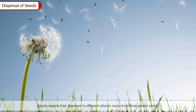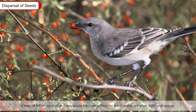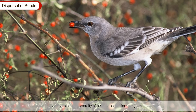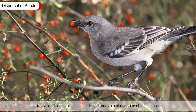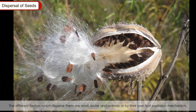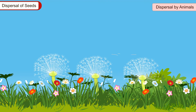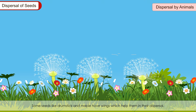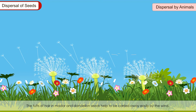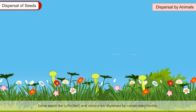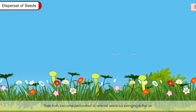Dispersal of Seeds: Seeds require dispersal to different places away from the parent plant. If they all fall in one place, there would be competition for food, water, minerals, light and space, and seeds may not grow into healthy plants or may die due to scarcity of essential conditions. To avoid this, fruits and seeds are dispersed to distant places by wind, water, animals or by their own fruit explosion mechanism. Dispersal by wind: Wind-dispersed seeds are small and light. Some seeds like drumstick and maple have wings to aid dispersal; tufts of hair in madar and dandelion help them float on wind; and seeds like luffa and datura are dispersed by a sieve mechanism, where fruits become perforated and release seeds by swinging in the air.